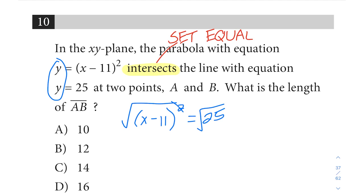If we take the square root of both sides to cancel out that exponent, then we will get two answers because remember x minus 11 could equal positive 5, but then the square root of 25, negative 5 squared is also 25. So you can have x minus 11 equals positive or negative 5.